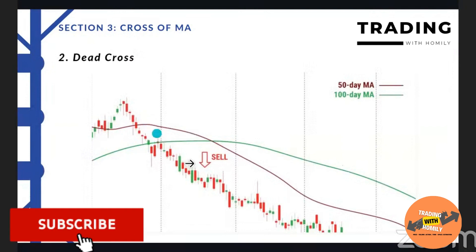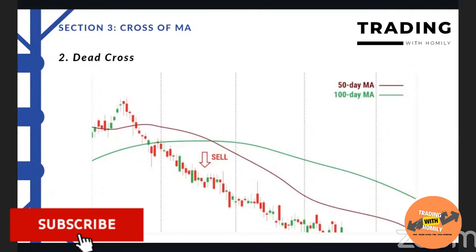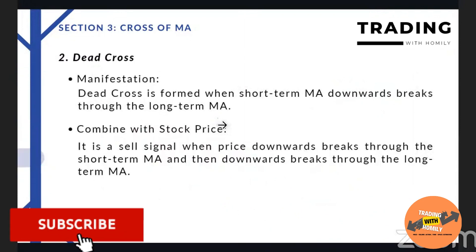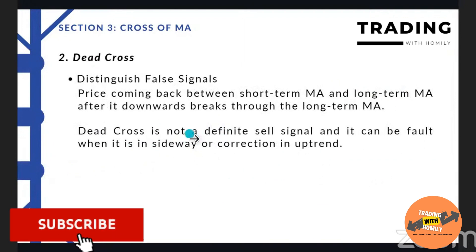If the trend already tells you it's a downtrend, then you might be careful. Or if the stock price is in an uptrend but there's some adjustment, it might show a dead cross in the uptrend - then you need to apply another indicator to do the analysis first. Because it's not definite that when the dead cross or golden cross appears, it's an opportunity to buy or sell. You need to be aware and take care of the trend also - is it in an uptrend, sideway, or correction in an uptrend?